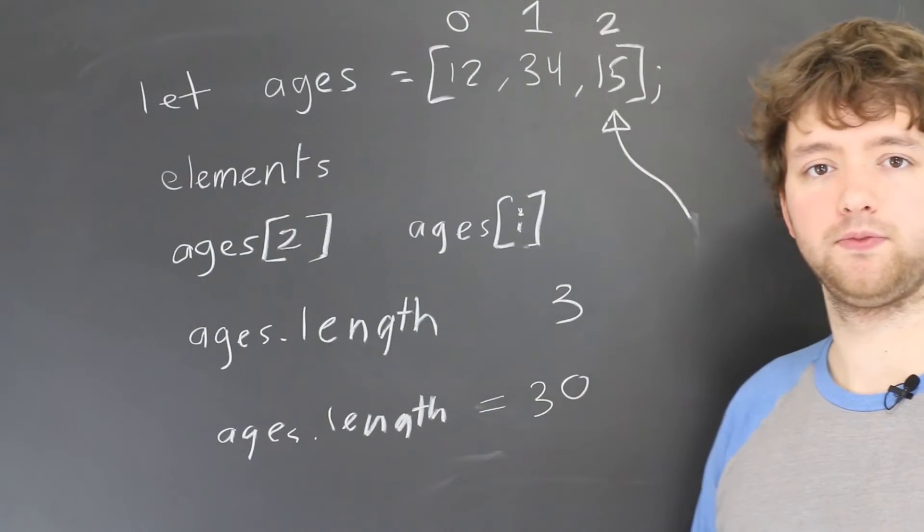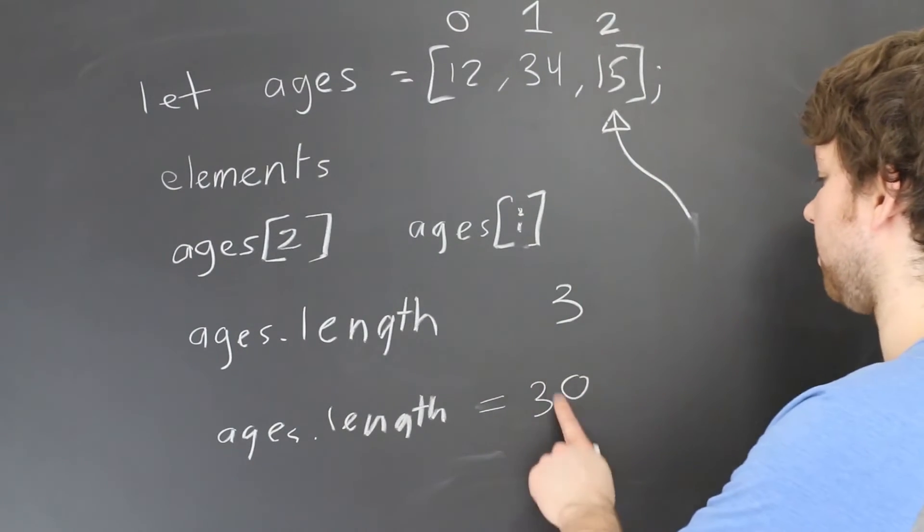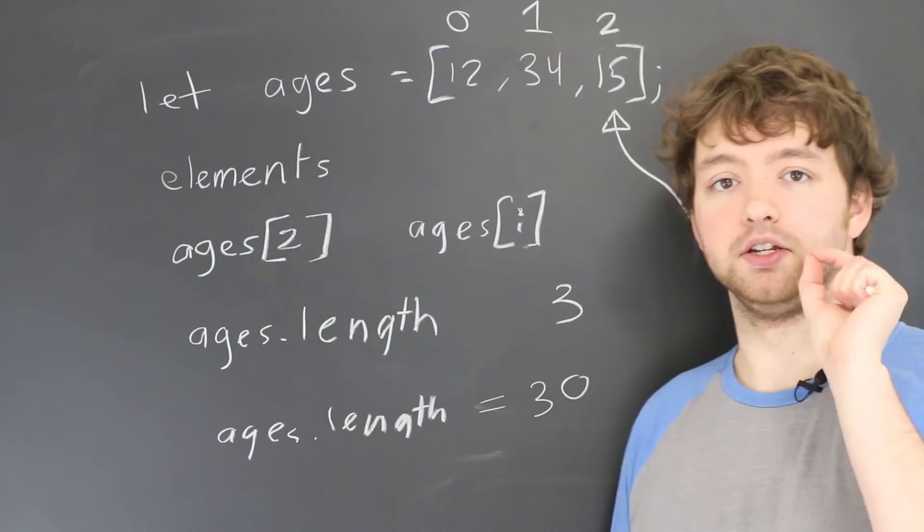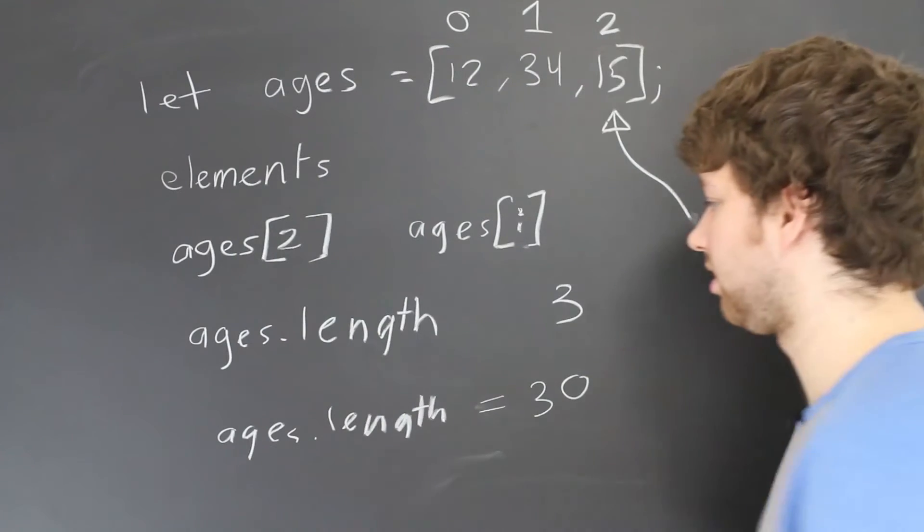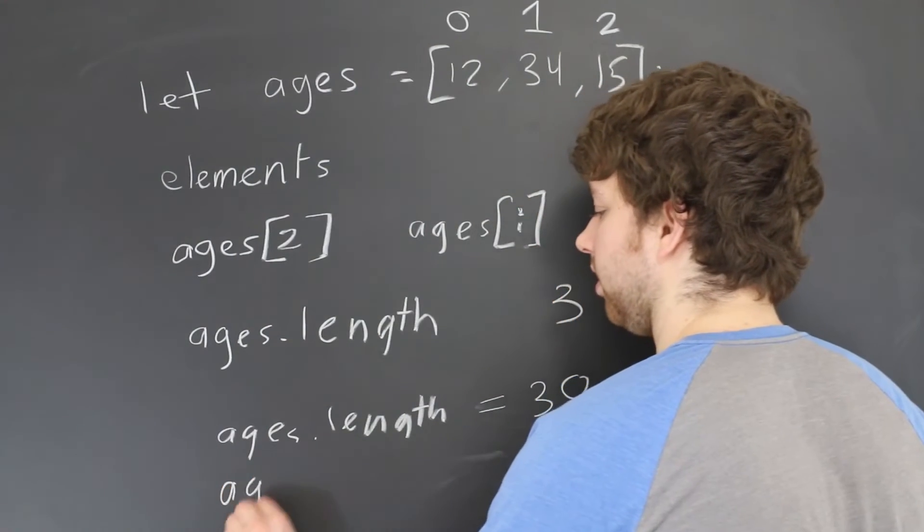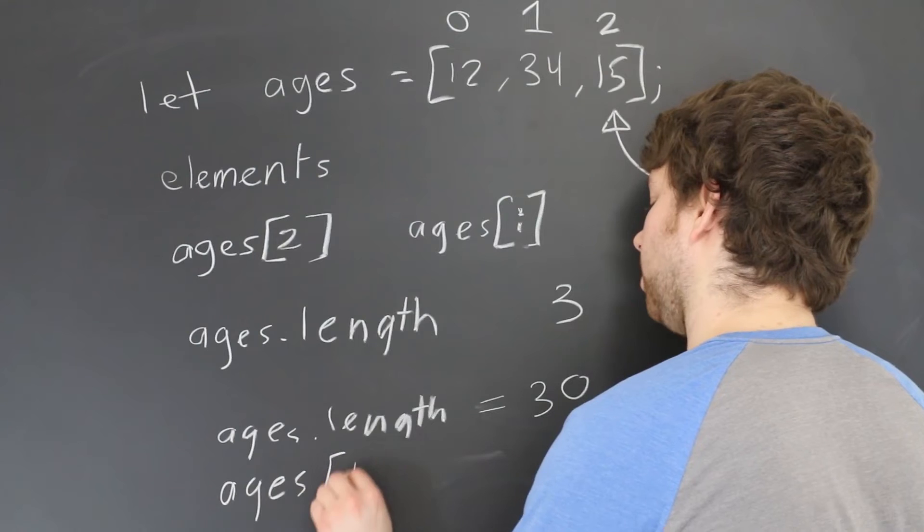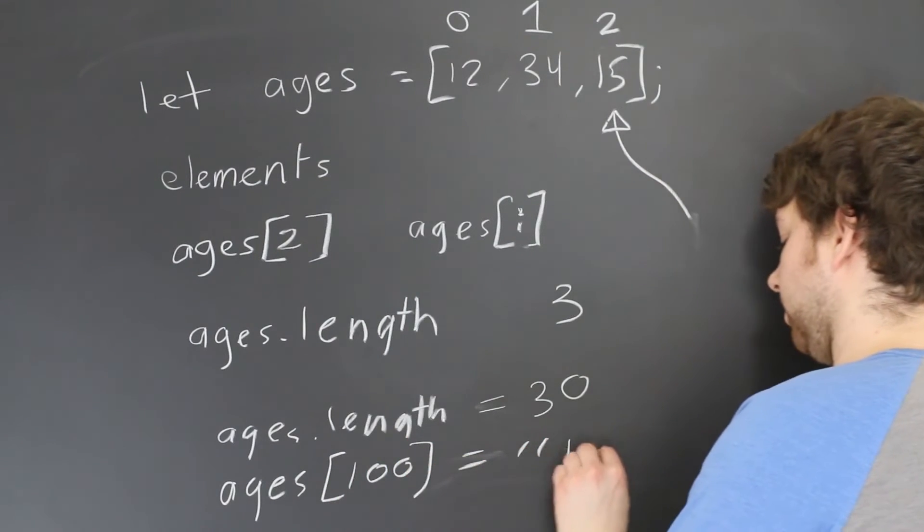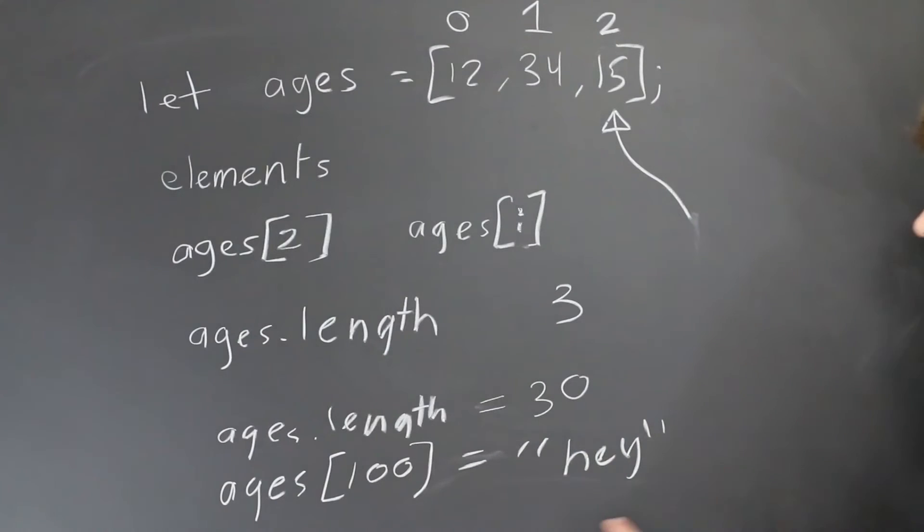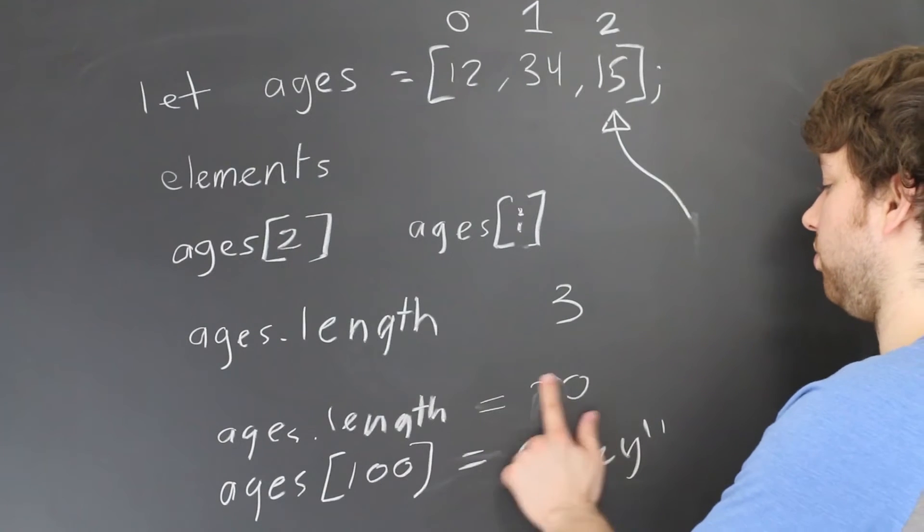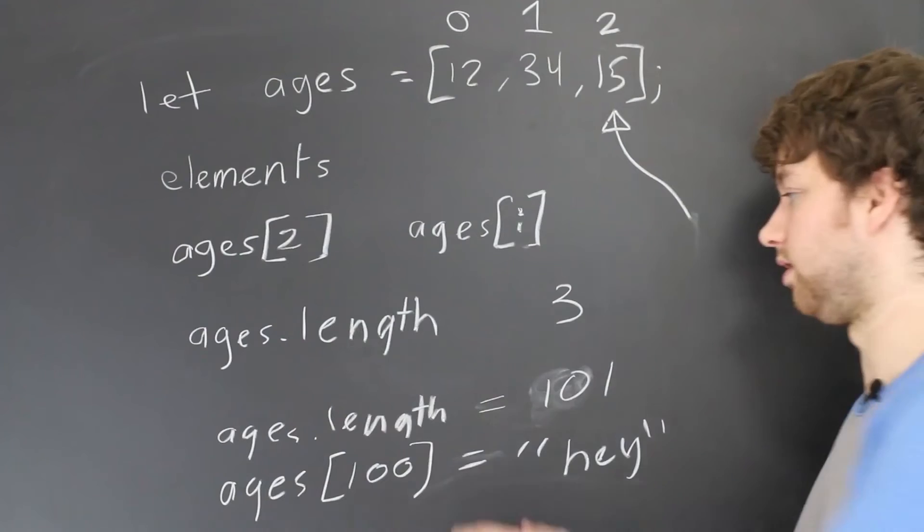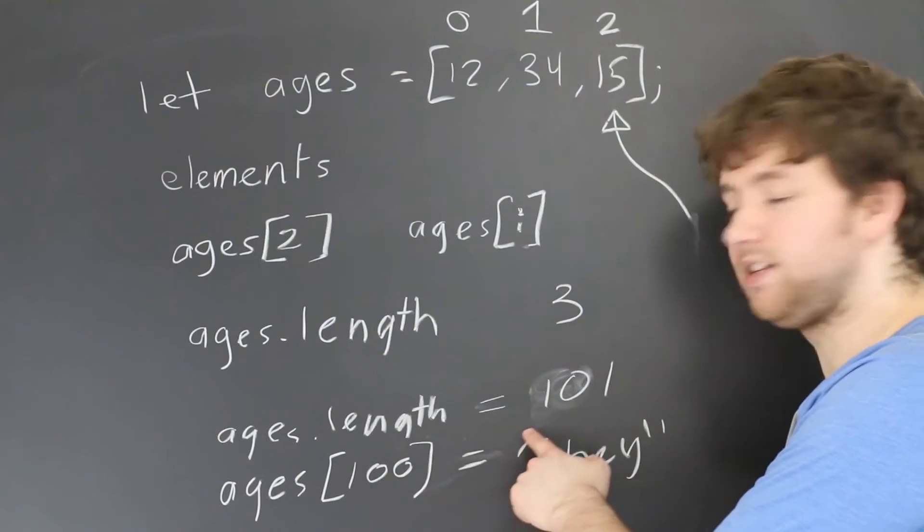The other thing is we can actually assign a value to an index that doesn't exist. If we did ages[100] and assign that the value hey, for example, this is actually going to do the same thing. It's going to extend that length to 101. Why 101? Because the length is always going to be at least one more than the highest index.